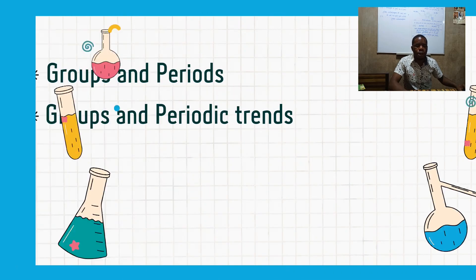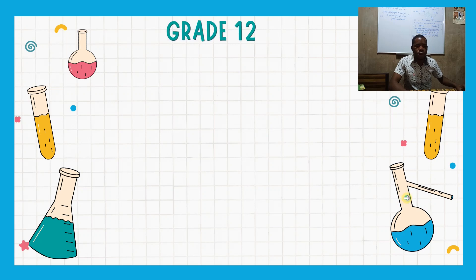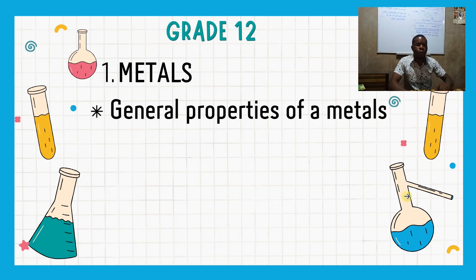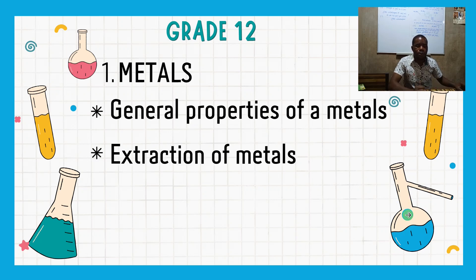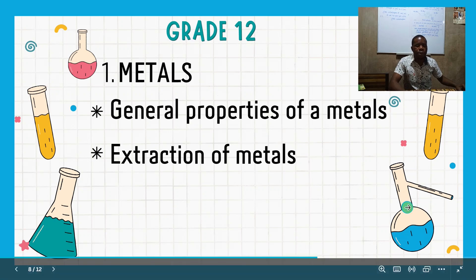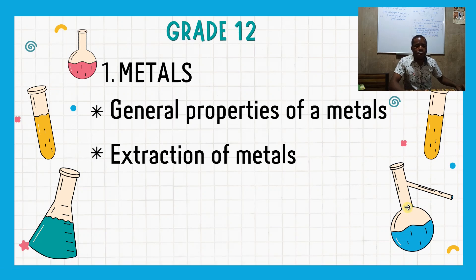Now we move to Grade 12 topics. The first Grade 12 topic which does not miss is metals. Under metals you need to look at the general properties of metals and their uses, extraction of metals such as copper, iron, zinc, and aluminium, uses of metals, alloys, and corrosion.